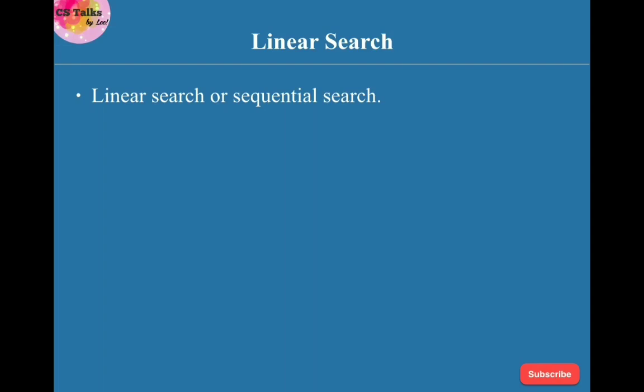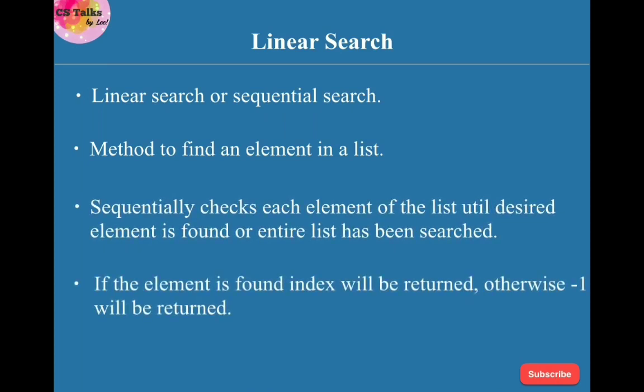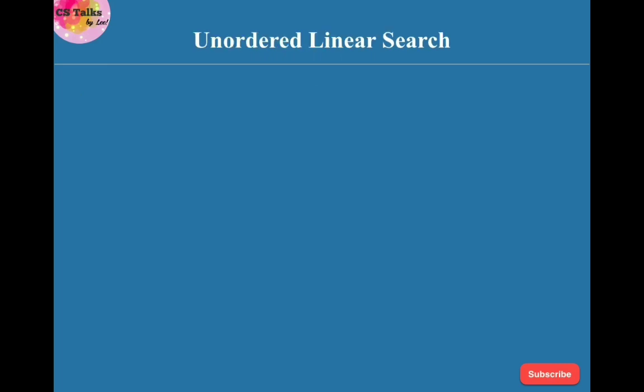is a method for finding an element within a list. This algorithm sequentially checks each element of the list until the desired element is found or the entire list has been searched. If the element is found, it will return the index of that element, otherwise it will return -1. There are two types of linear